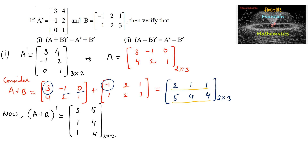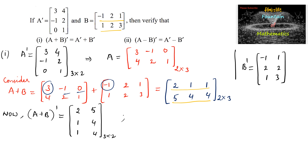Now let us find B transpose. Interchanging rows and columns: the first row [-1, 2, 1] becomes the first column, so we write -1, 2, 1; and the second row [1, 2, 3] becomes the second column, so we write 1, 2, 3. Thus B transpose = [-1, 1; 2, 2; 1, 3].